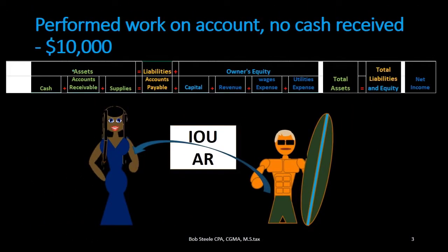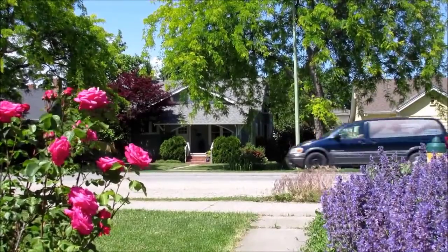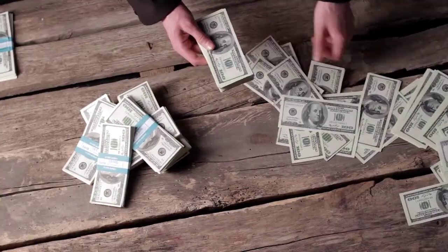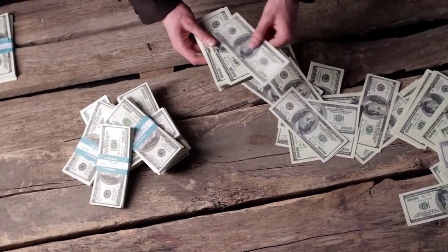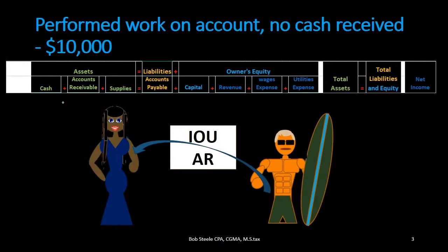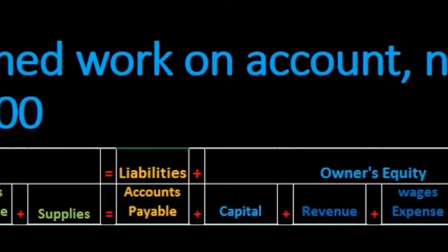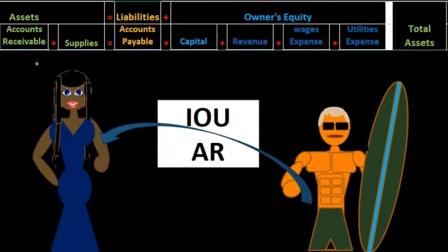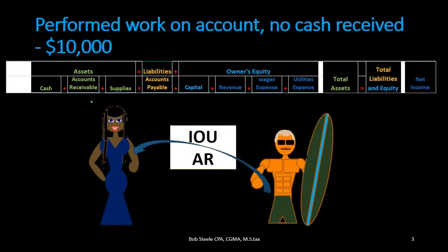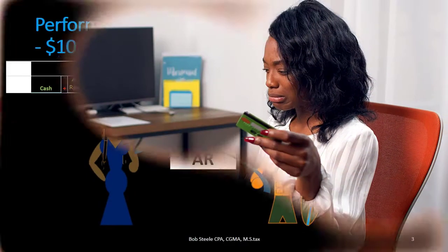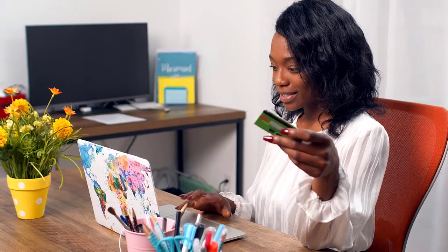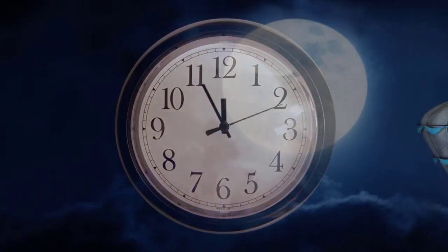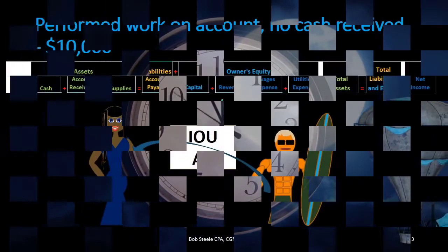Quick review of the accounting equation: assets equal liabilities plus equity. We need to memorize the accounts that fit into those subcategories. In terms of assets for this problem, we have cash, accounts receivable, and supplies. We focus here on accounts receivable, looking at the accounts receivable cycle — selling something on account and then receiving payment at a later time.